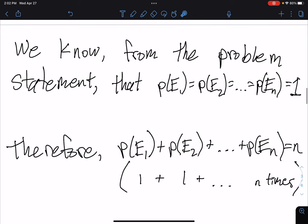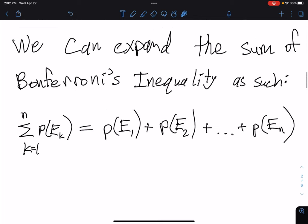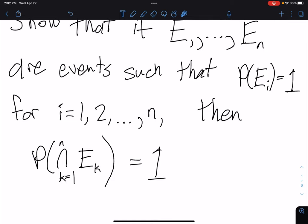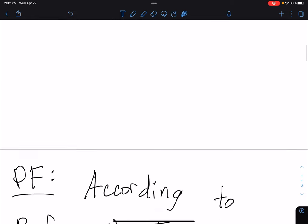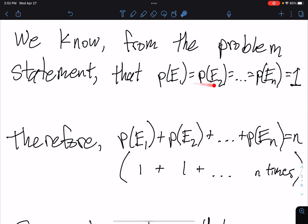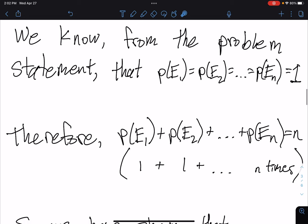Now if we go back up to the problem statement, it tells us that probability of EI equals 1 for all the I equals 1, 2 all the way up to N. So when I interpret that here, we have probability of E1 equals probability of E2 equals probability of E3 all the way up to the probability of EN, and those are all equal to 1. We got that from our problem statement.